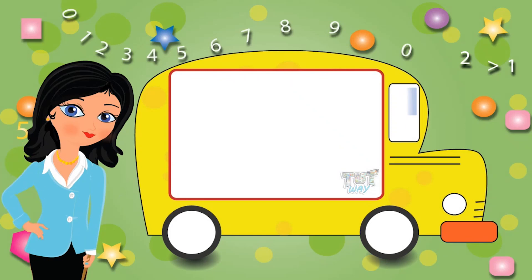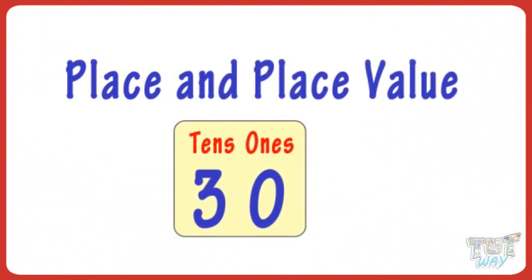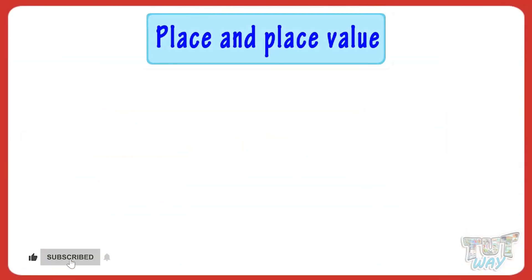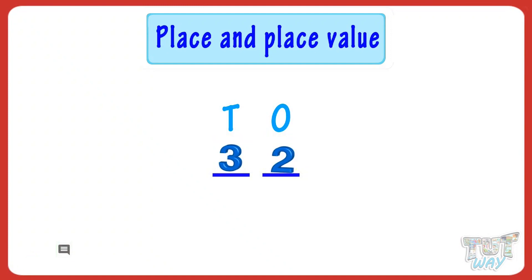Hi kids! Today we will learn what is place and place value of a digit in a number. So let's get started. Place is the position of the digit in a number. For example, here we have a number — the place of three in this number is the tens place.